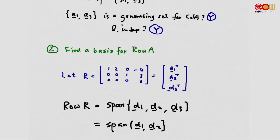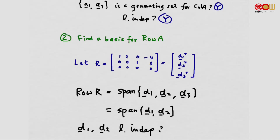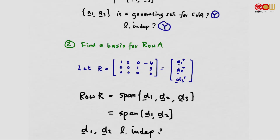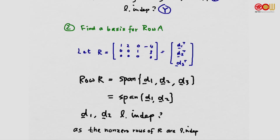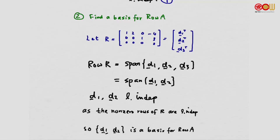So d1 and d2 form a generating set for the row space of R. Are they linearly independent? Yes, as we have seen earlier. So we get a basis for the row space of A.